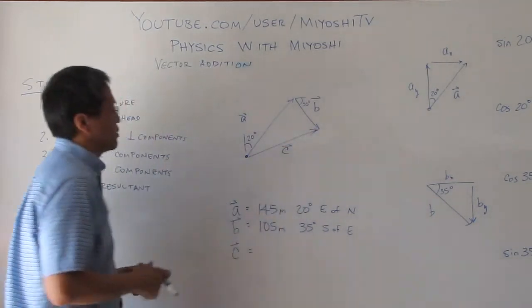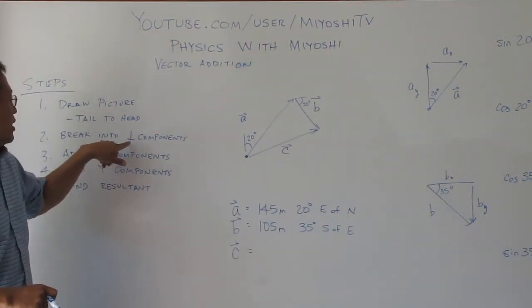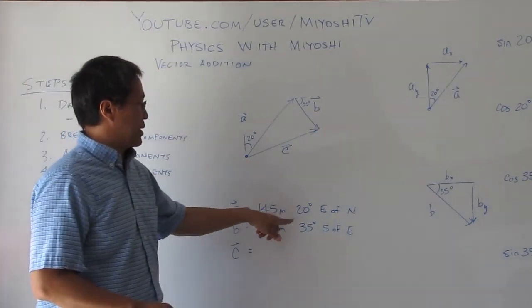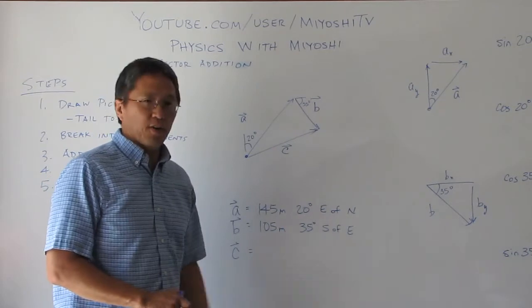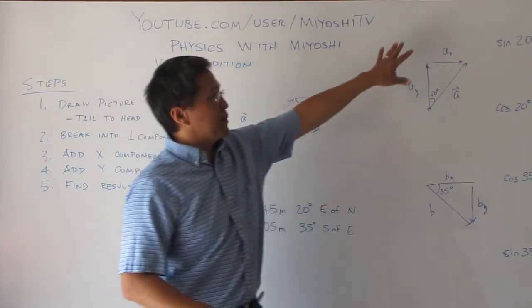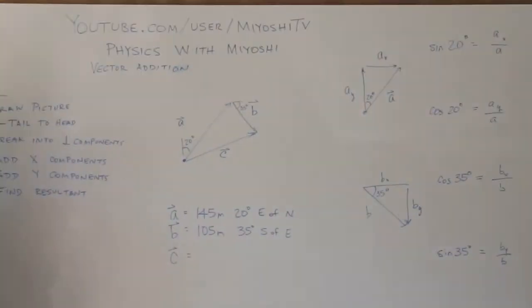Then make sure you break your vectors into components. So A in this case is 145 meters 20 degrees east of north. B is 105 meters 35 degrees south of east. And what I'm going to do is break them into components over here. And I'll go through that part.